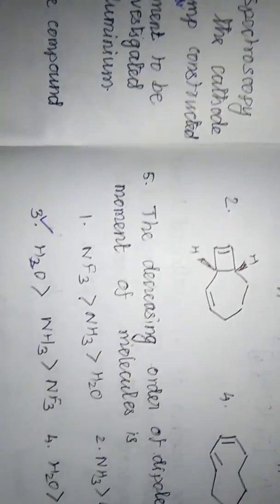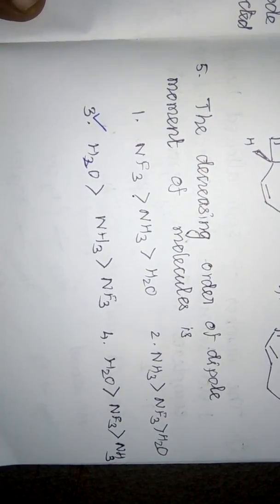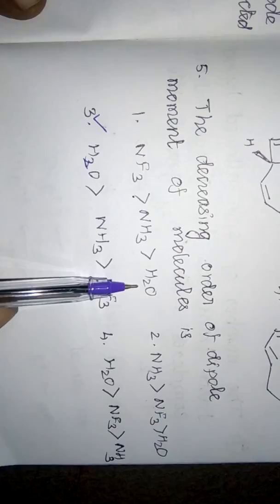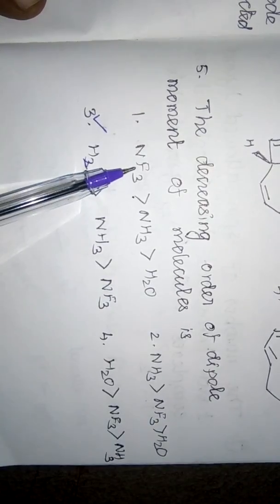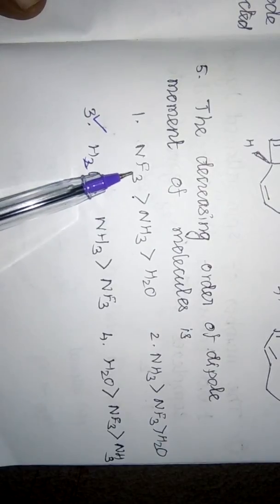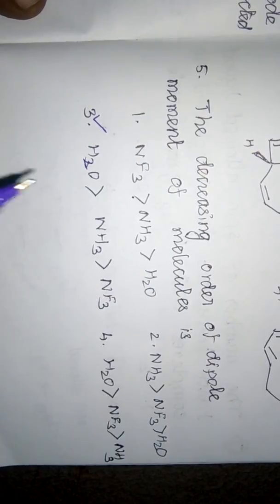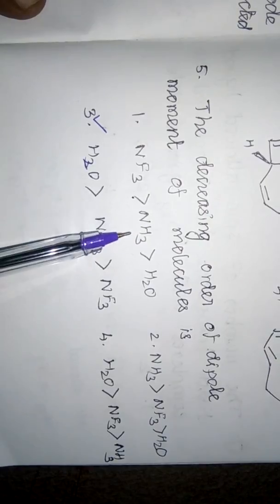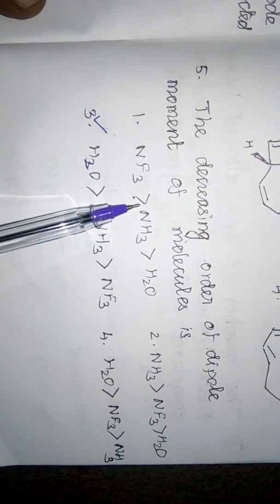The next question is the decreasing order of dipole moment of molecules. The three molecules given are NF3, NH3, and H2O. In NF3, the dipole moments of the fluorine atoms are in opposite directions to each other, so the dipole moment of NF3 is the least among the three.